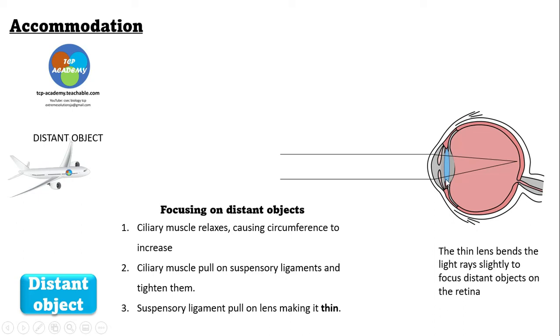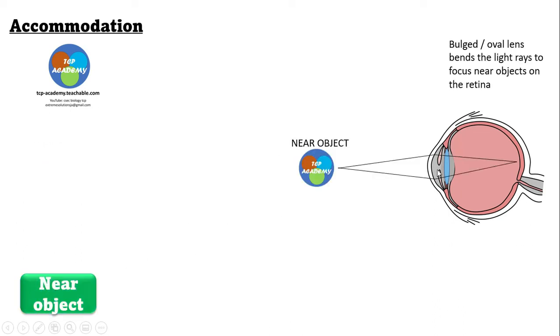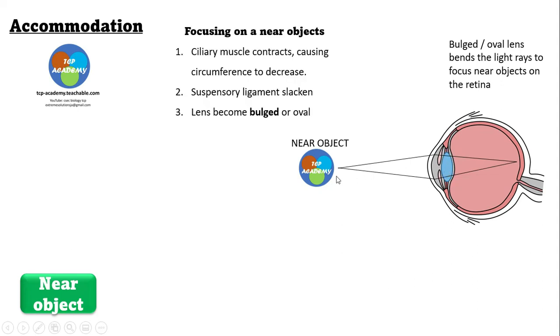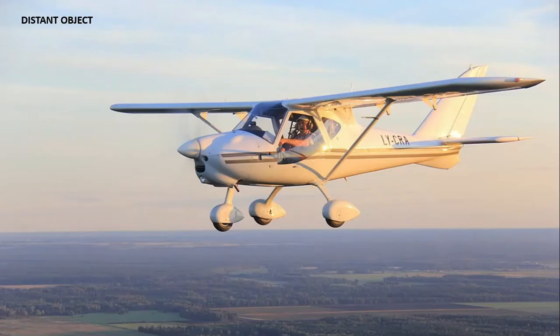Let's pay attention once more to the lens. Here we have a very thin lens seeing the distant object. Here we have a lens looking at a very close object — the lens now changes to a bulged or more convex lens, making the light rays bend more to focus on the retina. To see a very close object, like when you're reading, the lens becomes more convex, allowing you to see the image clearly. When seeing a distant object, the lens becomes thin, allowing slight bending or refraction of light rays, making the image fall on the retina.